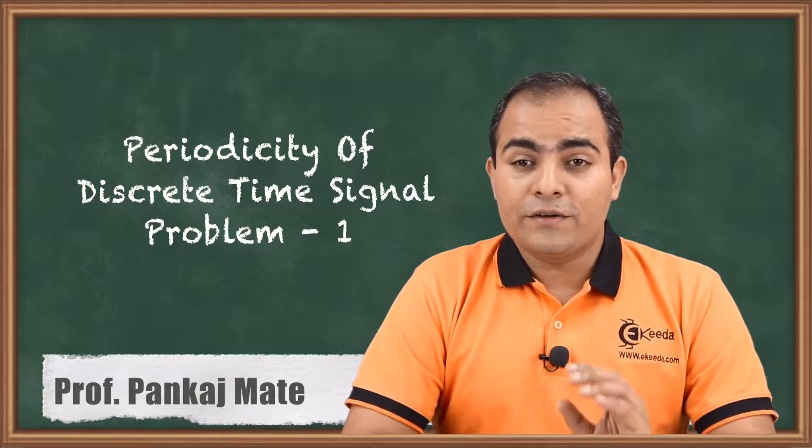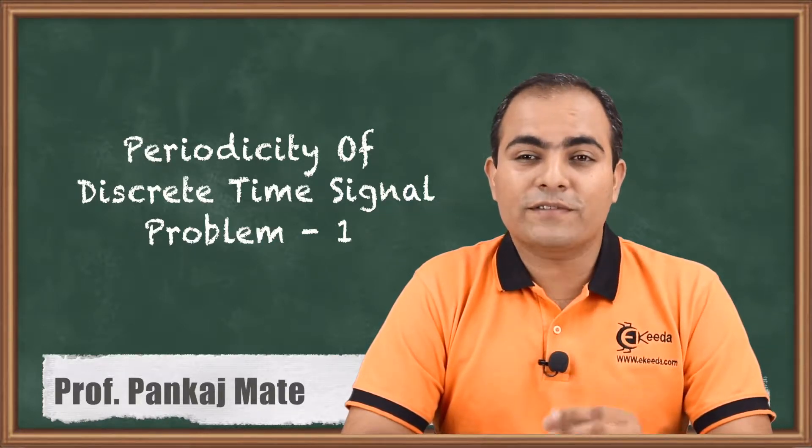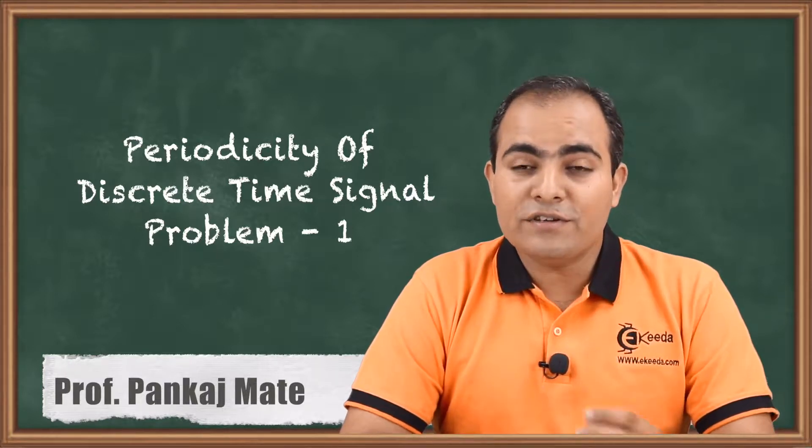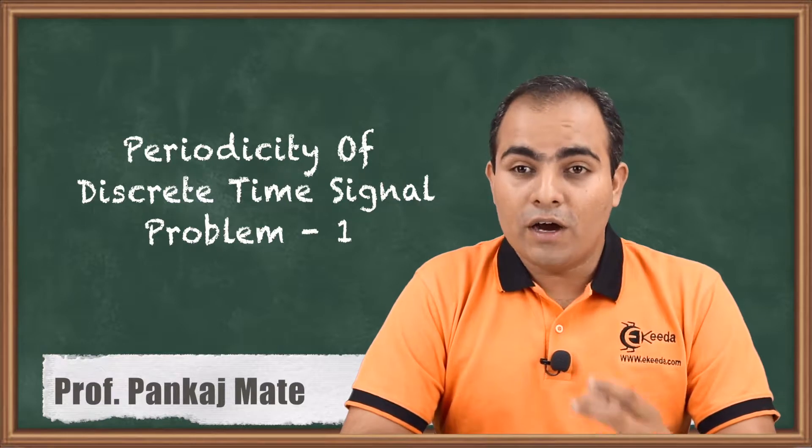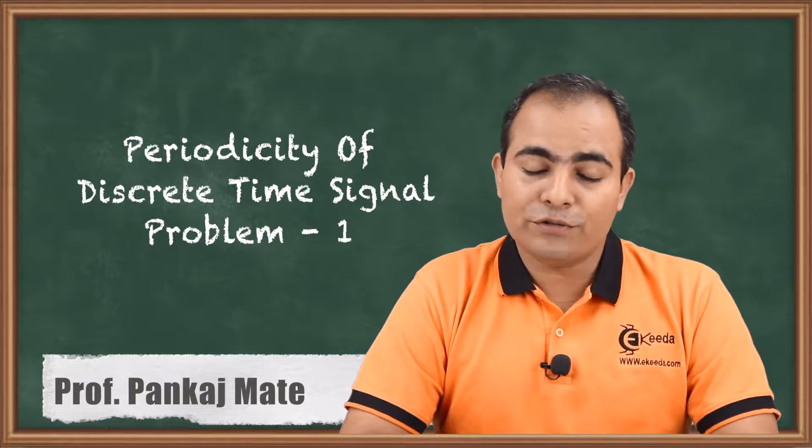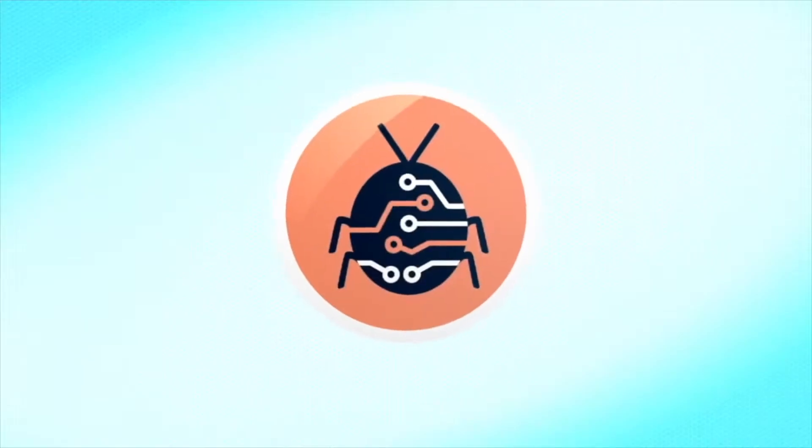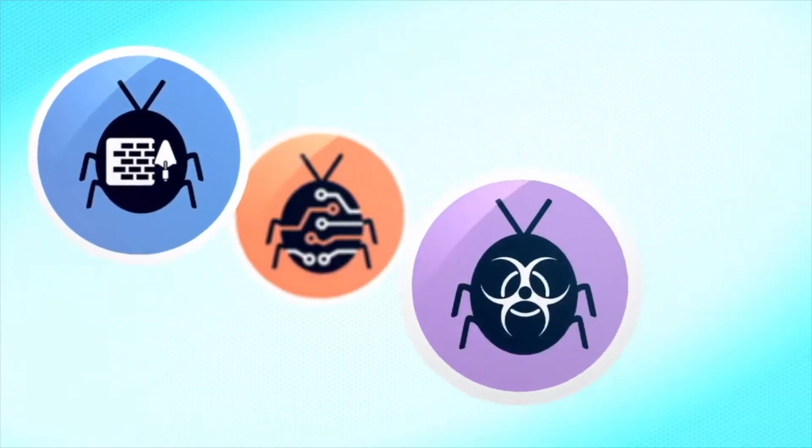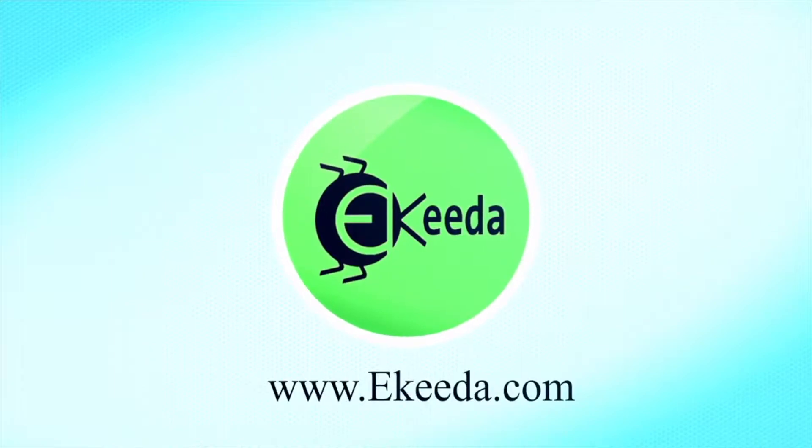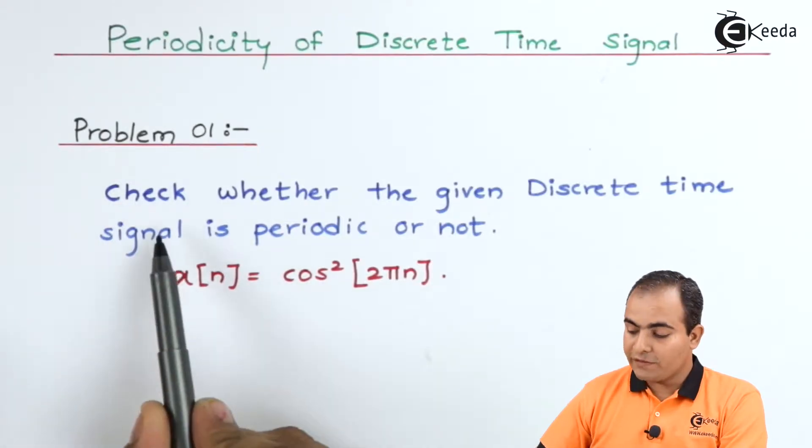What is important is we want a value of period, that is the number of samples value, but that value must be in a rational format. How to obtain that rational format and how to obtain the period value, I will show you from this numerical. Let's start with problem number one.